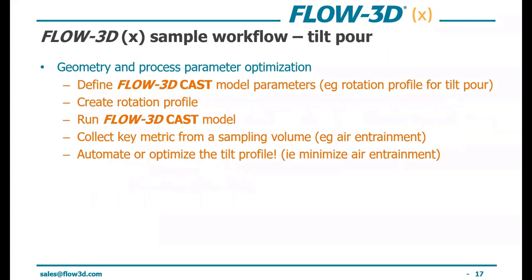Another generic example would be a tilt pour casting analysis — where you might be interested in minimizing the amount of entrained air during the fill sequence or during the rotation of your tilt. You parameterize your variable of interest, in this case the tilt pour rotation parameters, and collect the output — the total volume of entrained air left in the part after the tilt is finished. Then you define Flow3DX model parameters, create the rotation profile, run the model, collect key metrics, and automate or optimize the tilt profile.